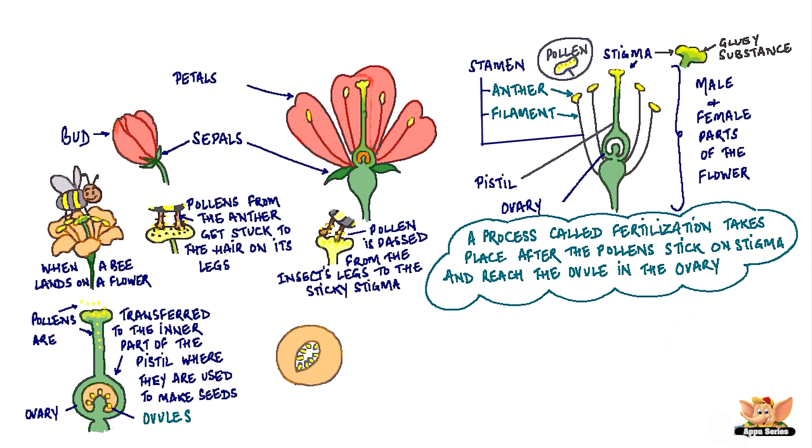After some time, as the ovary matures, it becomes a fruit and the ovule becomes the seed. You are going to study more about this process as you go higher in class.